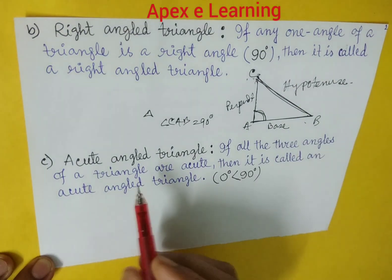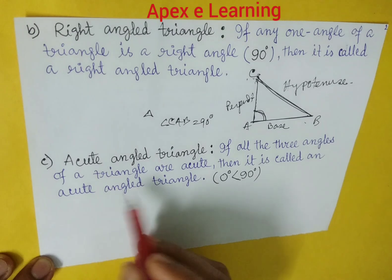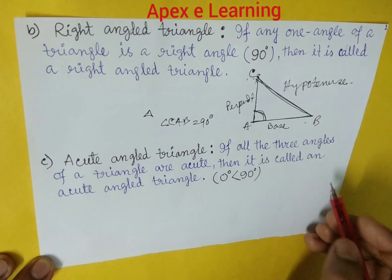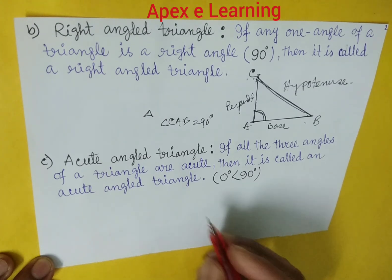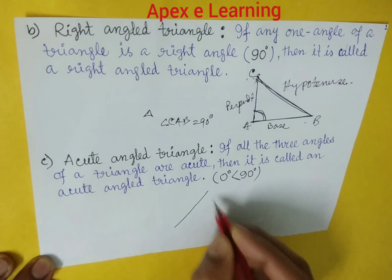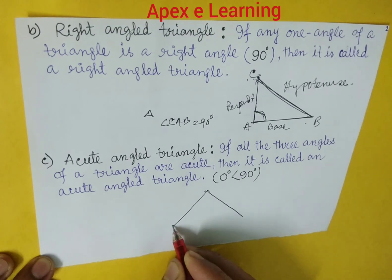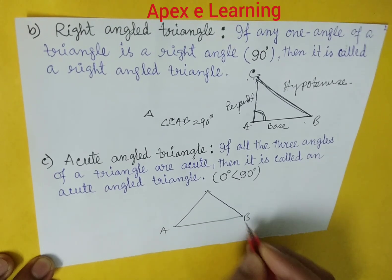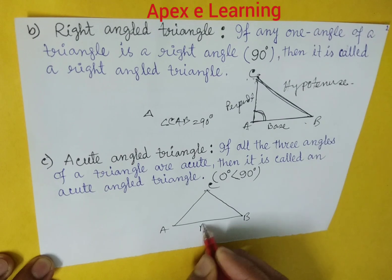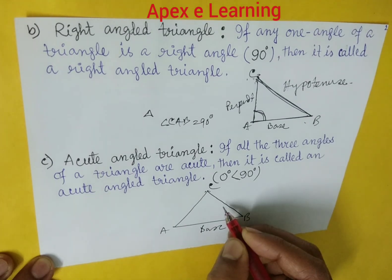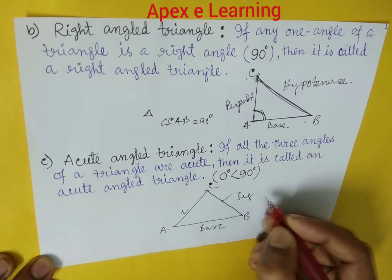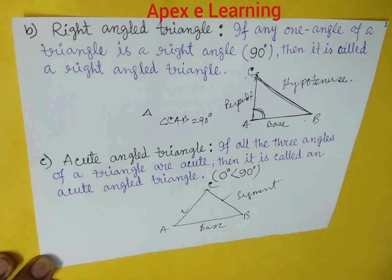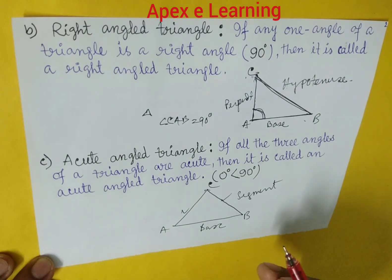Next is acute angle triangle. If all three angles of a triangle are acute, then it is called an acute angle triangle. If we draw a diagram, in figure ABC, AB is equal to the base and AC and CB are two different segments.